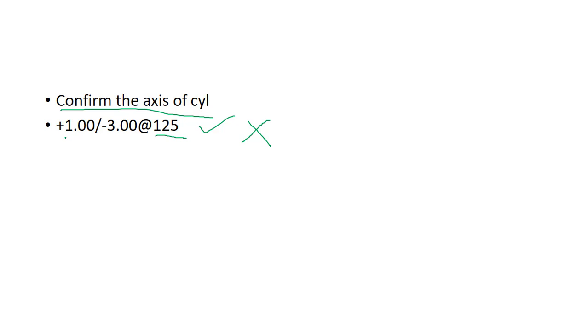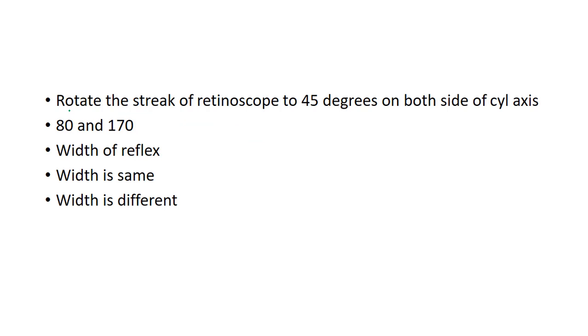According to this technique, first you will place the prescription in the trial frame, which in this case is plus 1 sphere with minus 3 cylinder at 125. Then you will rotate the streak of the retinoscope to 45 degrees on both sides of the cylindrical axis, which in our example is 125.